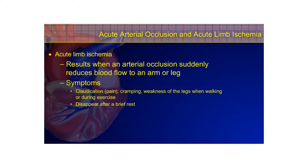Ischemia results when an arterial occlusion suddenly reduces blood flow to an extremity. The patient may experience intermittent claudication — pain due to lack of blood flow, causing cramping, muscle tightness, fatigue, or weakness of the legs when walking or during exercise. Symptoms occur because of increased oxygen demand, and the arteries supplying the calves, hips, or buttocks are narrowed by atherosclerotic plaques. Symptoms disappear after a brief rest and recur with activity.